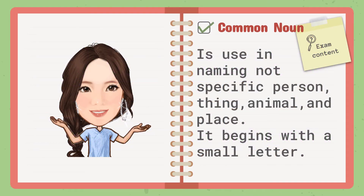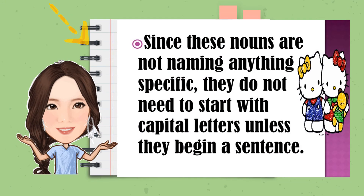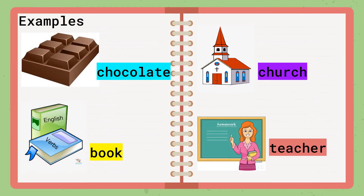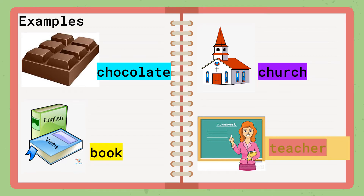Common noun is used in naming a not-specific person, thing, animal, and place. It begins with a small letter. Since these nouns are not naming anything specific, they do not need to start with capital letters unless they begin a sentence. Here are examples of common nouns: chocolate, book, church, and teacher.